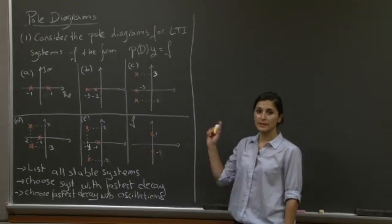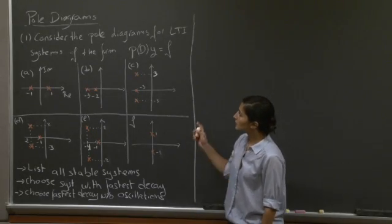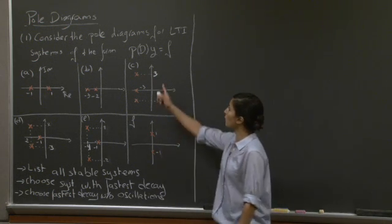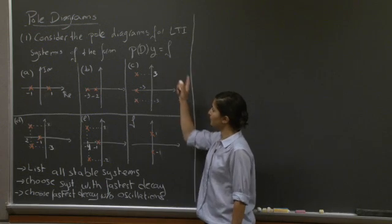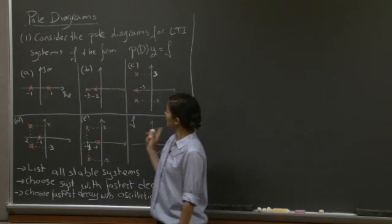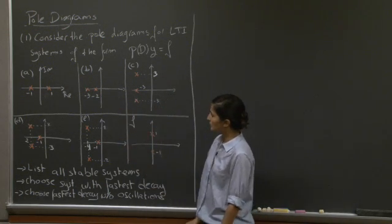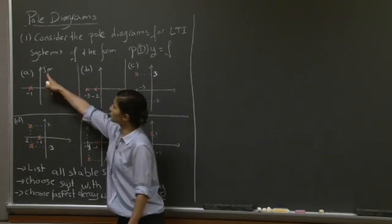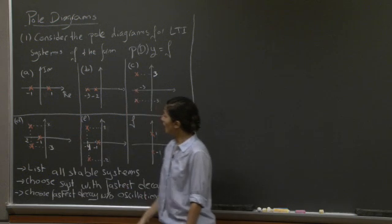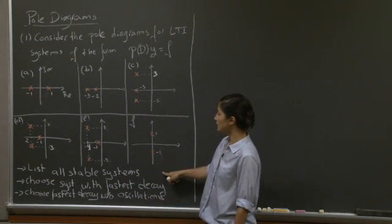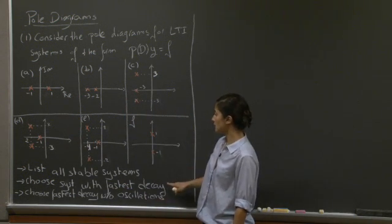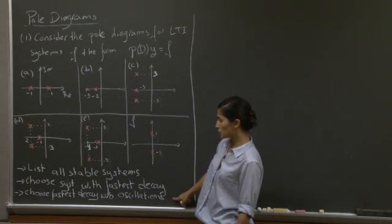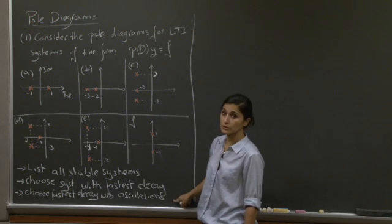Welcome. In this session, we're going to examine pole diagrams. We'll consider pole diagrams for linear time-dependent systems of the form p(D)y = f. We have a few pole diagrams to examine with the poles marked with red crosses. The axes are the imaginary axis and the real axis. The questions are: list all the stable systems, choose the systems with the fastest decay, and choose the fastest decay without oscillation.